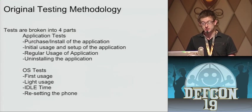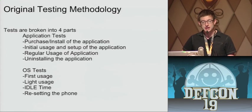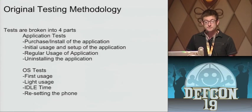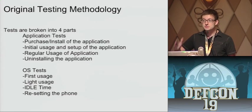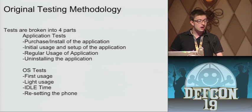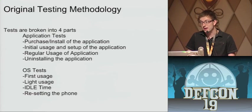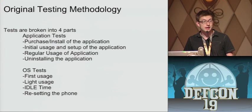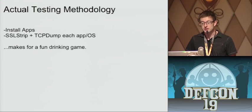I created a testing methodology where I would take the applications, purchase and install them, have initial usage, regular usage, and then uninstall the application for each app — so I'd know what traffic is going on at exactly what point. During operating system tests, I would have first usage when you're first installing your phone, light usage, regular idle time, and then when I reset the phone. It seemed like I would cover just about every aspect of every application and the OS, so I wouldn't miss any shiftiness. Because I thought if I were an OS creator, every 30 minutes I'd want to know where you are. Or if I'm an application owner, every 15 minutes — who have you called in the last 15 minutes?